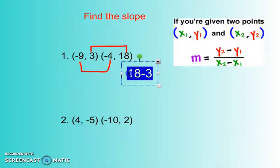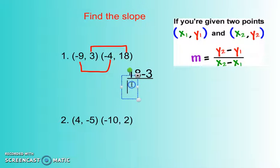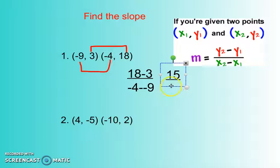I would show my work. So I would take first of all the Y's and subtract them. That would be 18 minus 3, and I'm going to underline it because that's the top, that's my rise. And then underneath, I am going to subtract the X's. Negative 4 minus negative 9. So 18 minus 3 I know is 15. And negative 4 minus a negative 9 is 5.